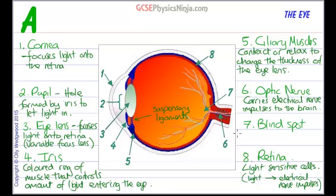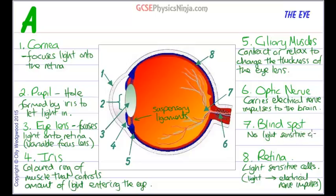Finally, number 7, the blind spot, is where the optic nerve goes into its channel to the brain. There are no light-sensitive cells in this area, so if any light hits that area it is not detected — which is why it is known as a blind spot.